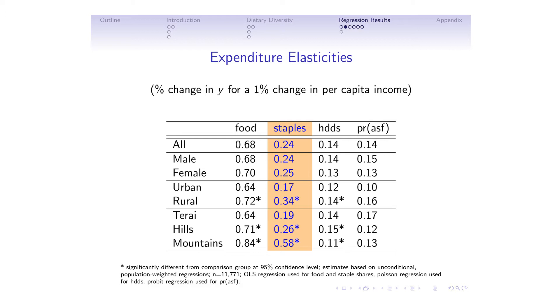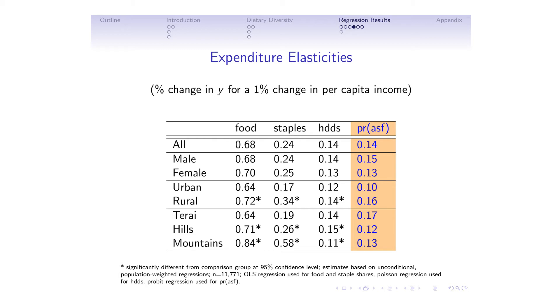The point I want to make is that in terms of household responsiveness to changes in income, dietary diversity and consumption of animal-sourced foods, while responsive to changes in income, are not strongly so. Simply increasing incomes will lead to improvements in dietary diversity and increases in animal-sourced food consumption, but those responses are relatively weak. So we have to look at other things besides just income to drive improvements in dietary diversity.